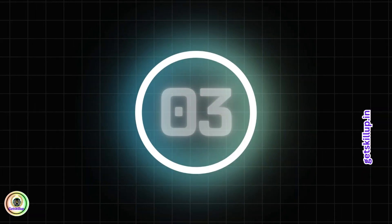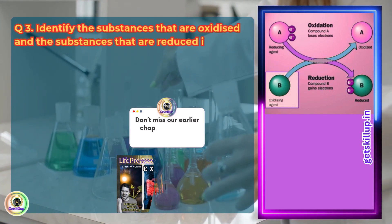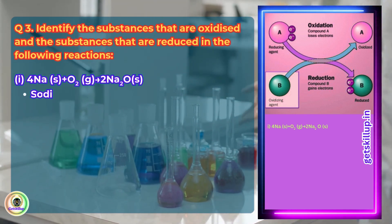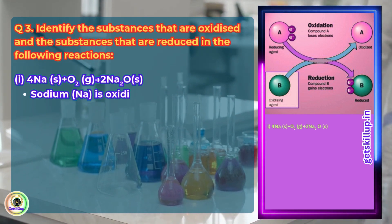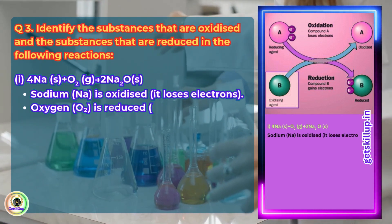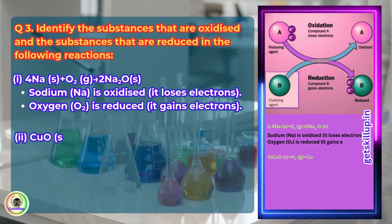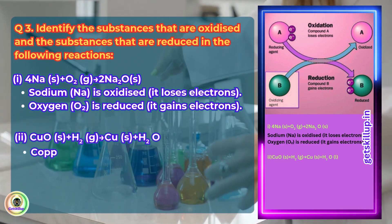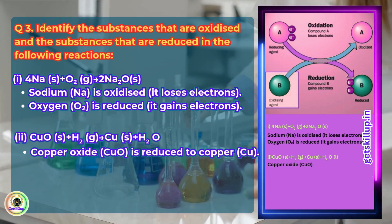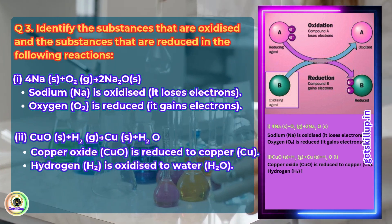Question 3. Identify the substances that are oxidized and reduced in the following reactions. First: 4Na (solid) + O2 (gas) → 2Na2O (solid). Sodium (Na) is oxidized — it loses electrons. Oxygen (O2) is reduced — it gains electrons. Second: CuO (solid) + H2 (gas) → Cu (solid) + H2O (liquid). Copper oxide (CuO) is reduced to Cu. Hydrogen (H2) is oxidized to water (H2O).